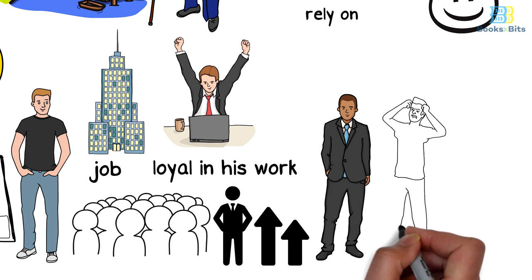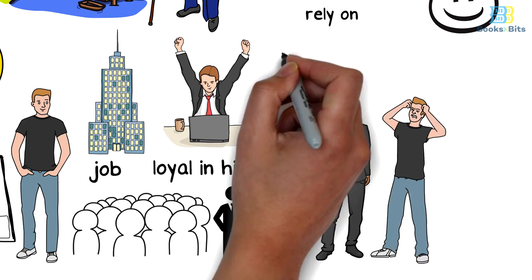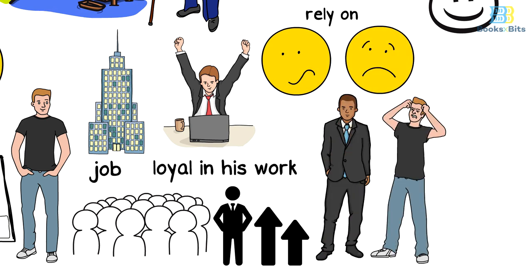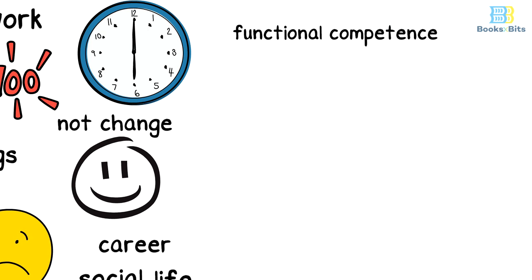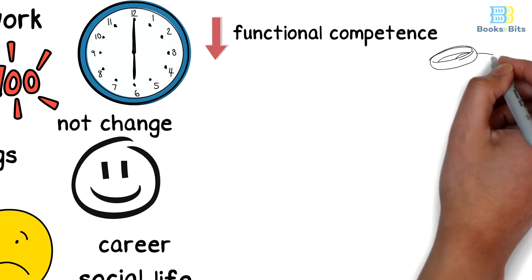The young man got very angry because of what happened, and anxiety and frustration began to control him and affect his career and social life. So his functional competence began to decline, and his fiancée decided to break up with him.